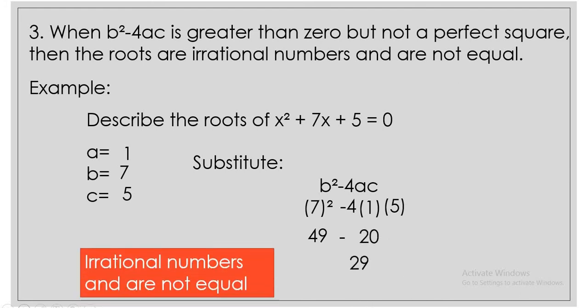49 minus 20 is 29. So when b squared minus 4ac is greater than 0, meaning your answer is a positive number but not a perfect square — 29 is an example of a number that is not a perfect square — then the roots are irrational numbers and are not equal.